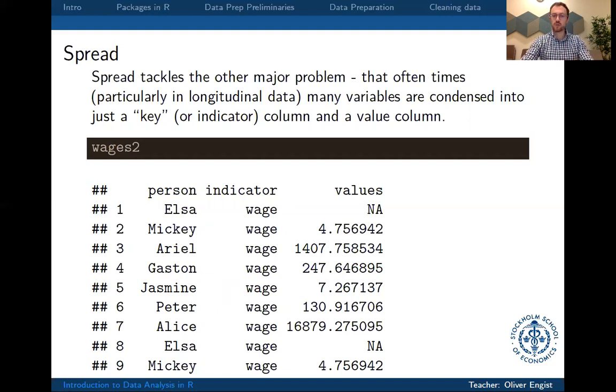And of course we also want to have, in this case what we would like to have is a separate column for wage and a separate column for experience or whatever other variables that might later come up, and basically for each person we would only like to have one observation.